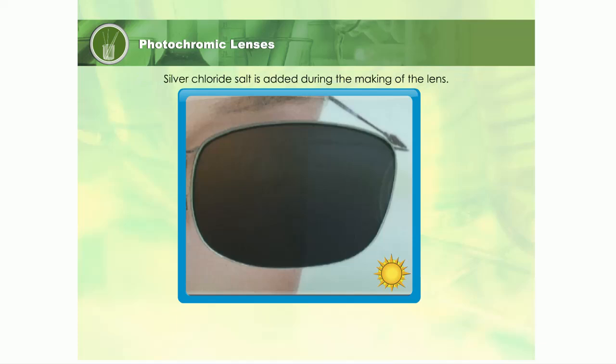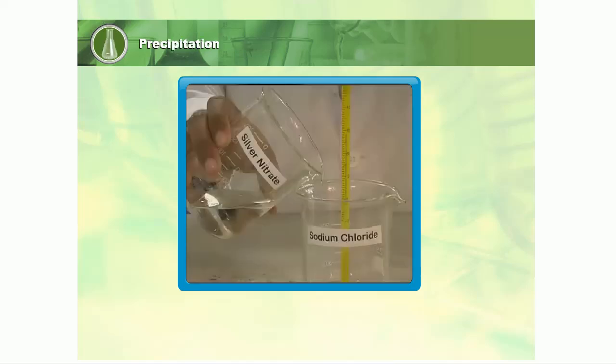Silver chloride salt is added during the making of the lens. Do you know how this salt is made? Silver chloride is produced when silver nitrate is added to sodium chloride.